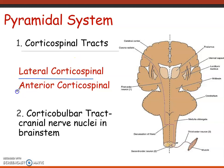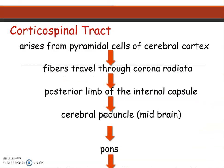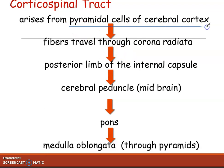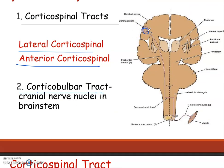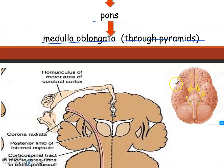These tracts arise from the pyramidal cells of the cerebral cortex and travel through the corona radiata, the posterior limb of the internal capsule, and the cerebral peduncle in the midbrain, then through the pons, and then the medulla oblongata and pyramids. They arise in the cerebral cortex as the first-order neuron, then reach the midbrain, then the hindbrain, then the medulla oblongata where they decussate.